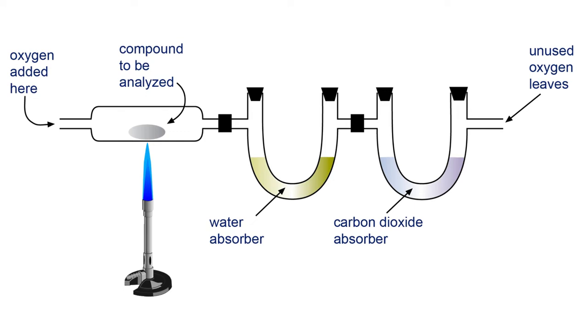Combustion analysis is done through an apparatus as shown here. We take our compound to be analyzed. This is typically a compound that contains either carbon or hydrogen in some ratio, or it might be a compound that contains carbon, hydrogen, and oxygen.